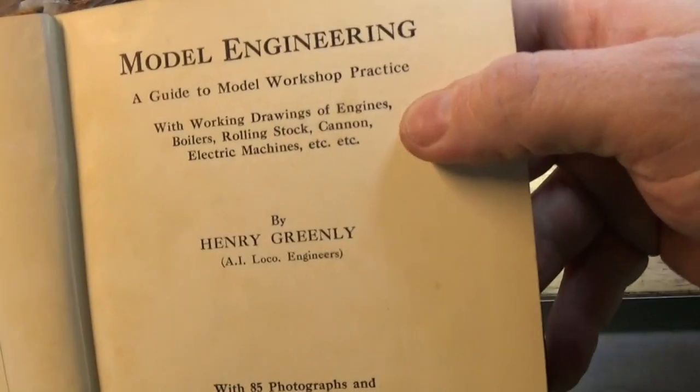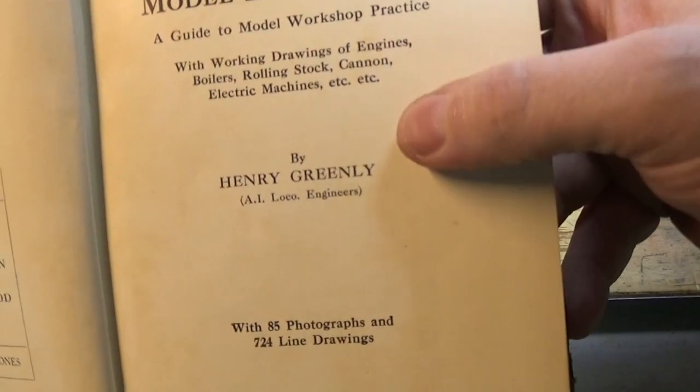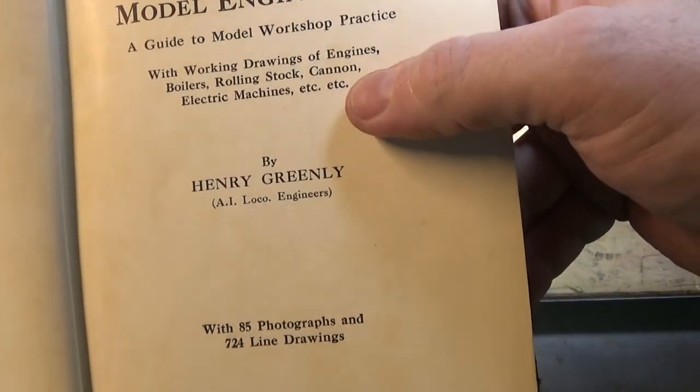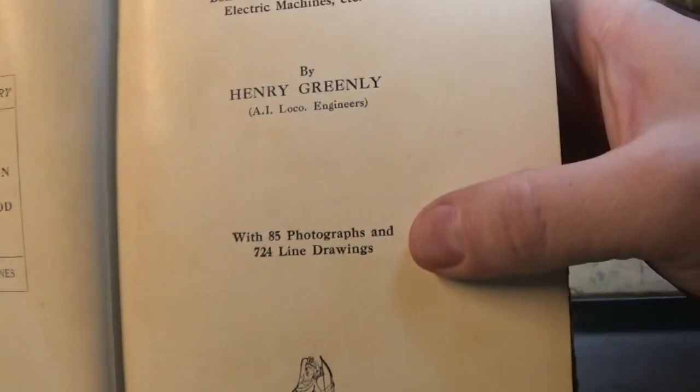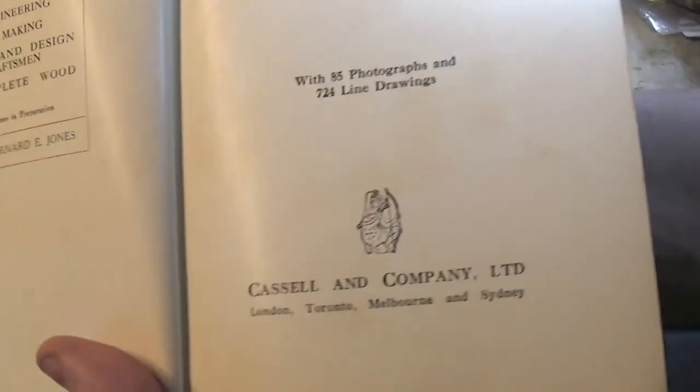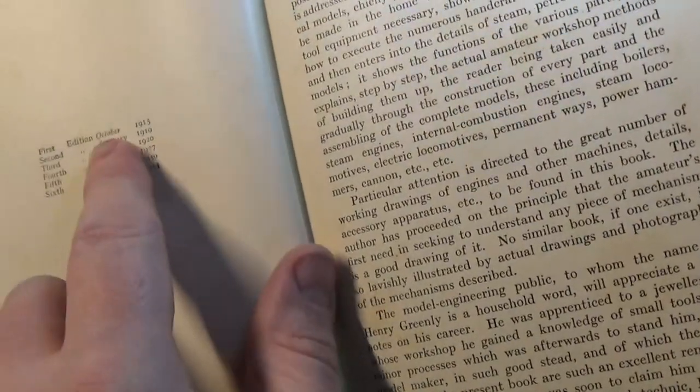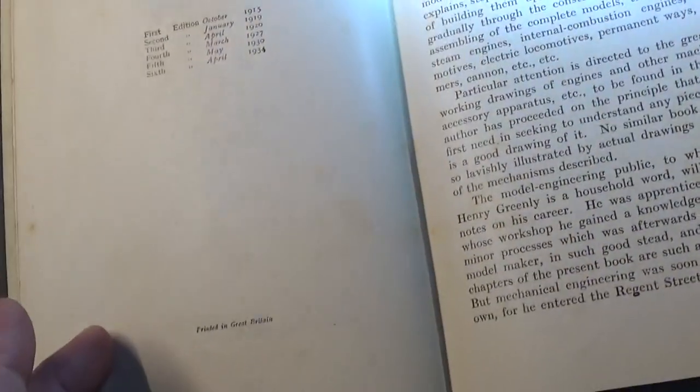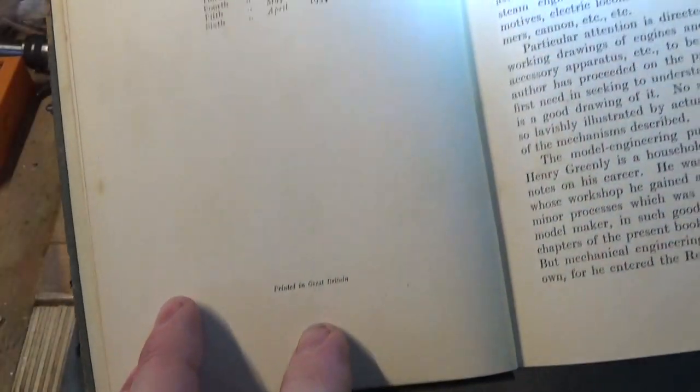A Guide to Model Workshop Practice with working drawings of engines, boilers, rolling stock, cannon, electric machines, etc. 85 photographs and 724 line drawings by Castles and Company. It was first published in 1915, this one's 1934, and printed in Great Britain.